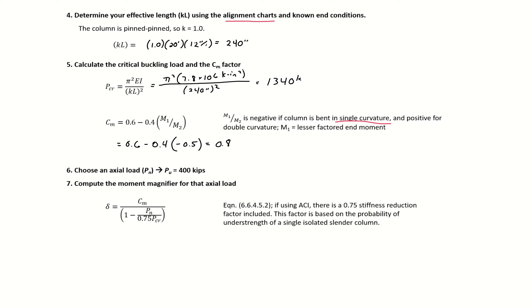We need to choose an axial load. We'll choose the axial load given for our load combination, so P_u equal to 400 kips.